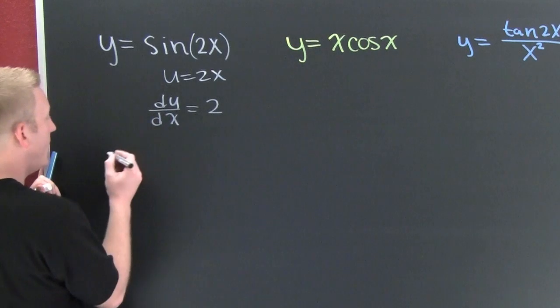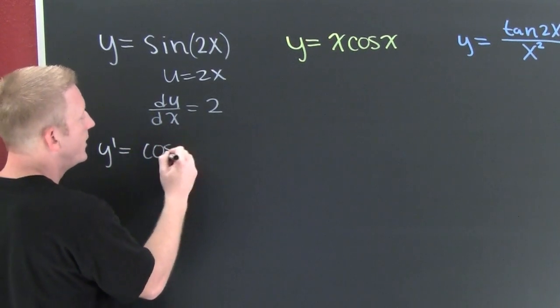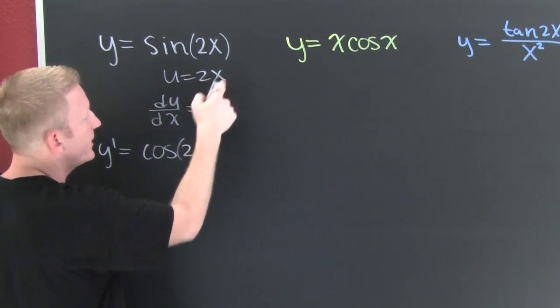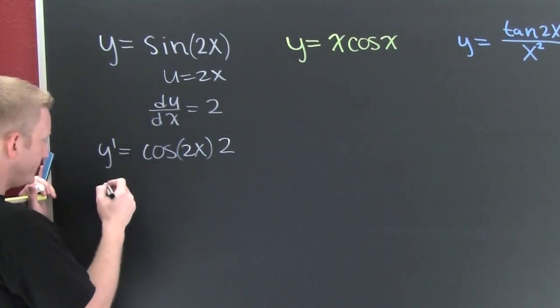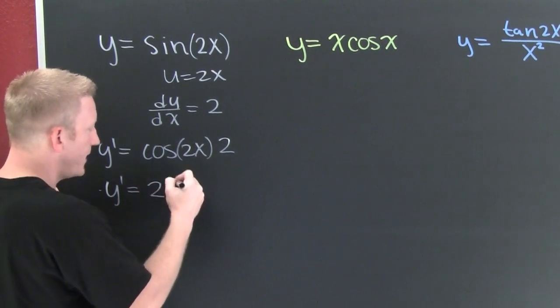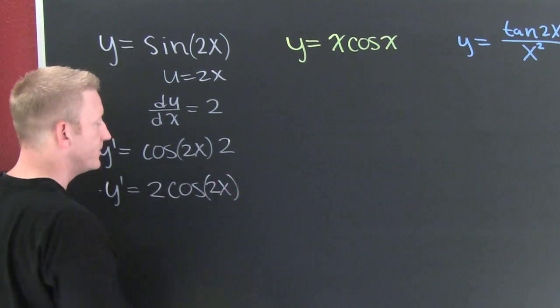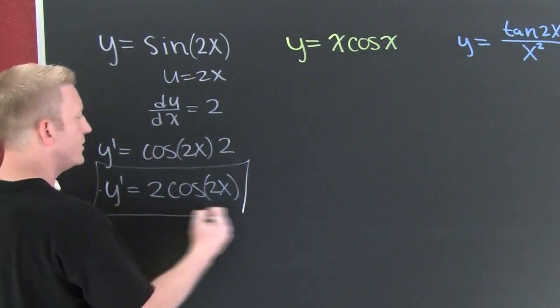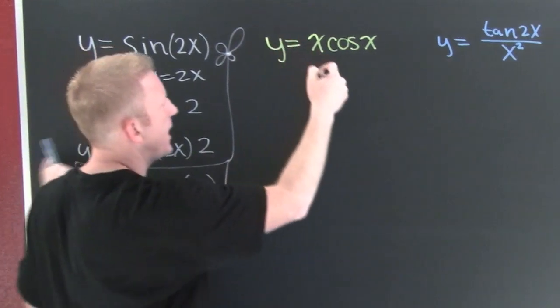So then y prime is going to be the cosine of my u, 2x, times the derivative of my u with respect to x, 2. Finish it up. The derivative is going to be 2 times the cosine of 2x. And then what? You did a box and a flower.